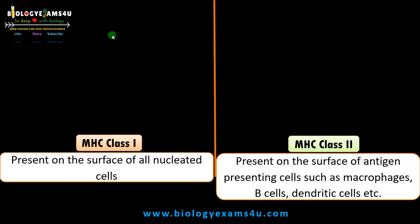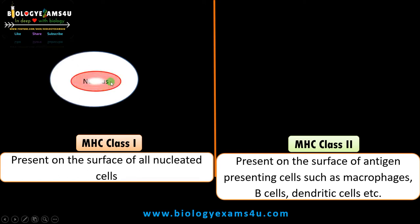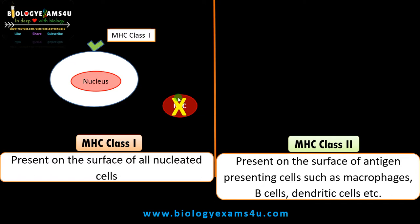Key point number one: MHC class 1 is present on all nucleated cells. So if a cell is a nucleated cell, MHC class 1 is present. To make it more clear, RBCs do not have a nucleus, therefore RBCs do not have MHC class 1 receptor.